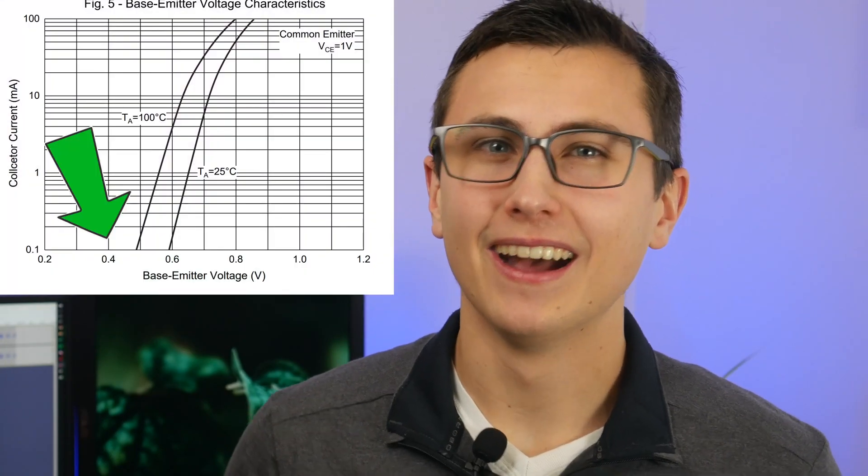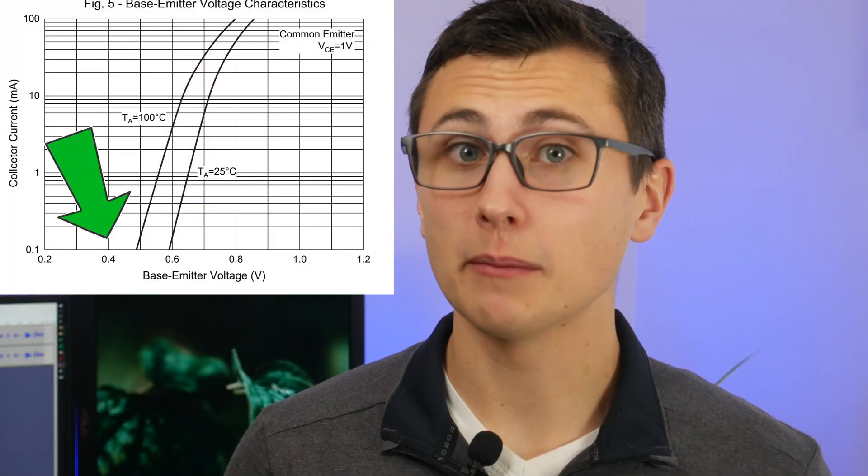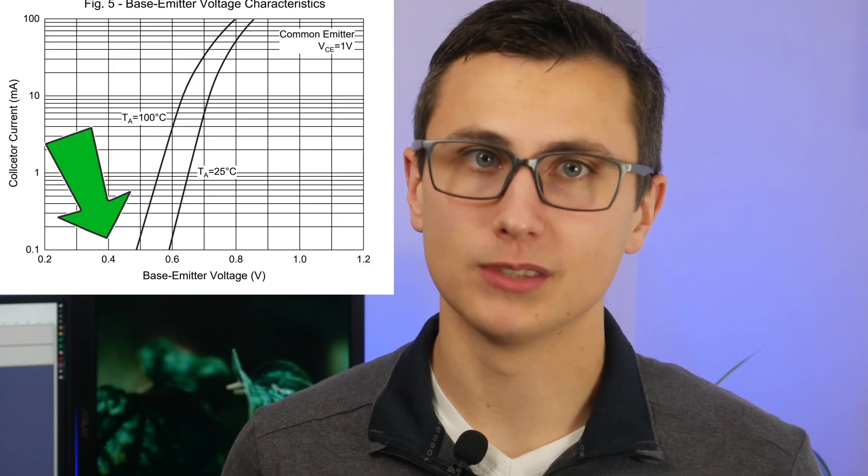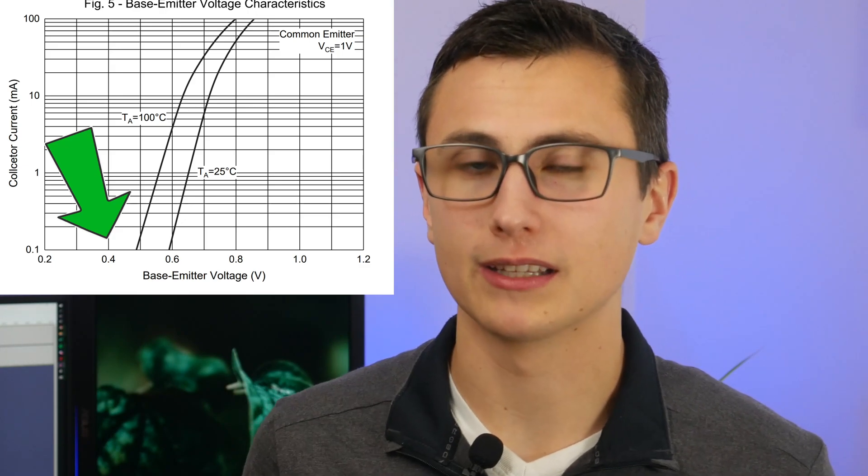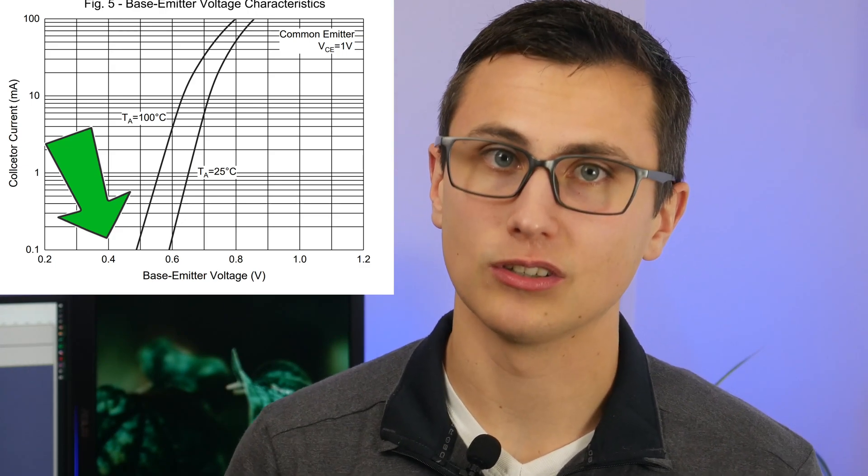Remember that bottom part of a transistor base-emitter characteristic curve? That crossover distortion comes from the major non-linearity from zero volts to about 0.7 volts applied at the base of a transistor. Because a Class B amplifier is biased with both transistors normally off, we introduce some non-linearities when the output voltage approaches zero volts. This is where the name crossover distortion comes in — because you're crossing over the zero volt point.